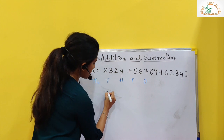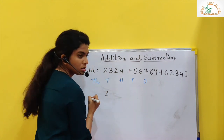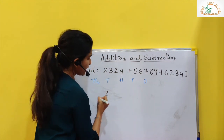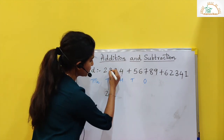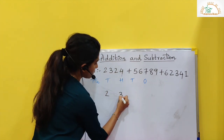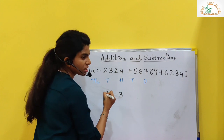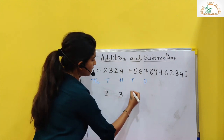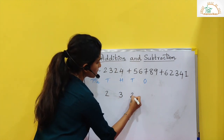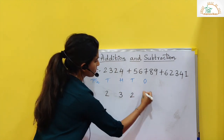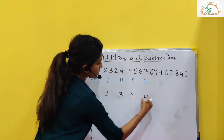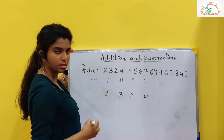I cannot put the number like this — starting from wherever I want. This is wrong. I cannot start the numbers from wherever I want. I have to place the numbers as per their place values. So here it is 2, 3, 24. So 2 is coming under the 1000 place value, 3 under the 100s place value, 2 under the 10s, and 4 under the 1s.